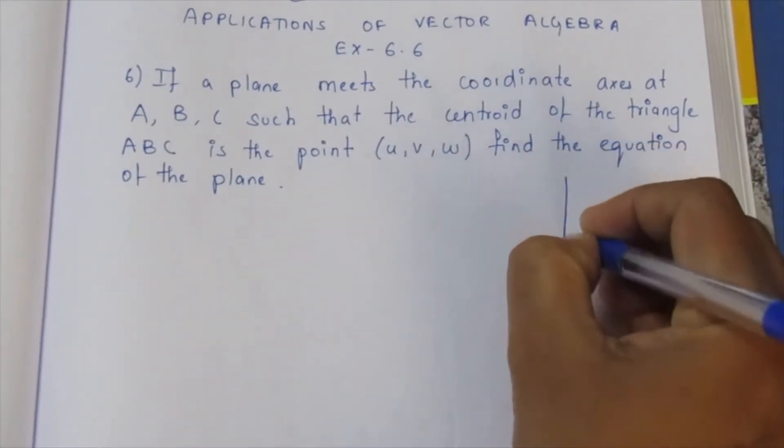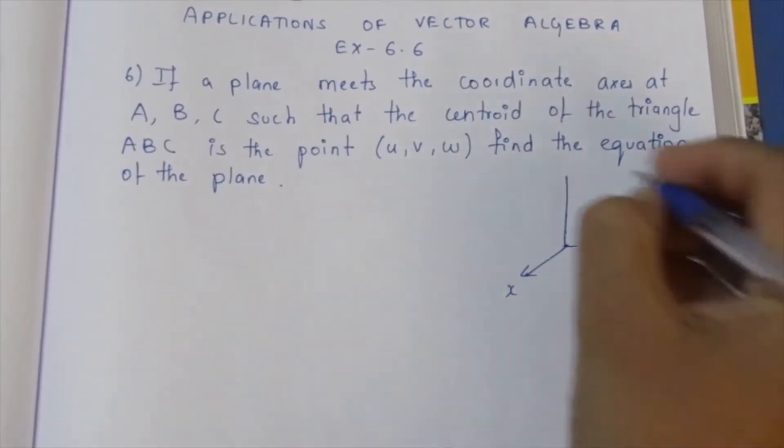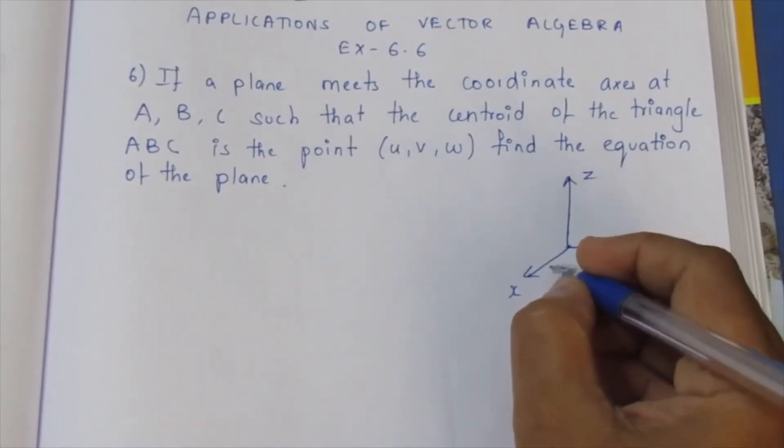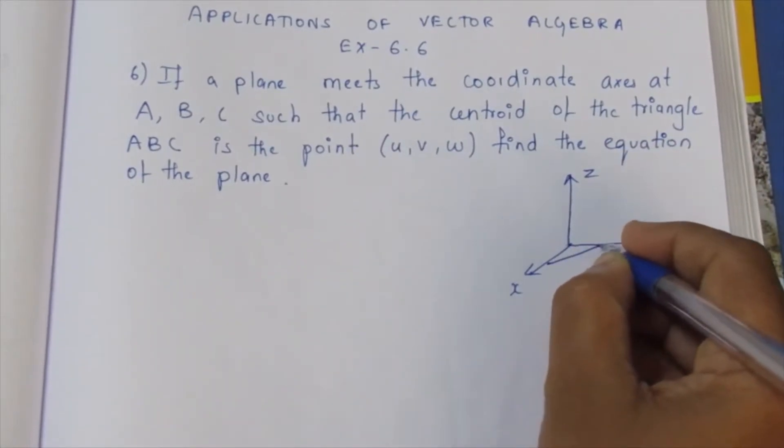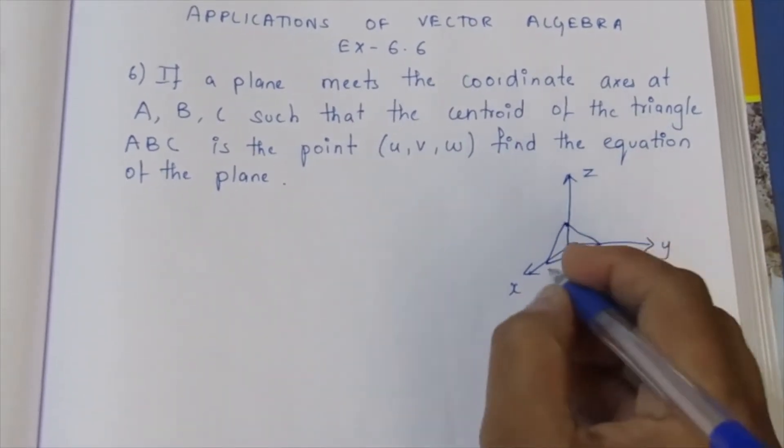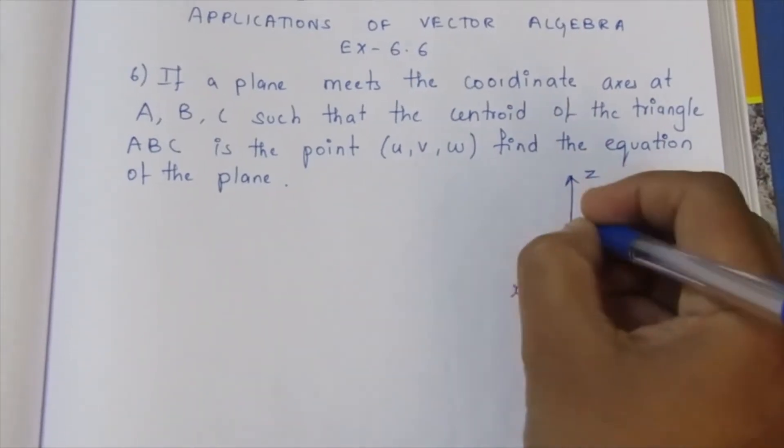The plane meets the coordinate axis. For example, if we take coordinate axes x, y, z, we have a triangle A, B, C. The x-axis meets at point A, y-axis at B, and z-axis at C.